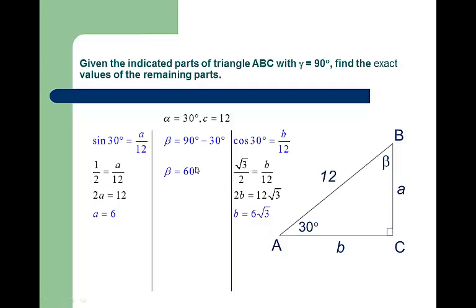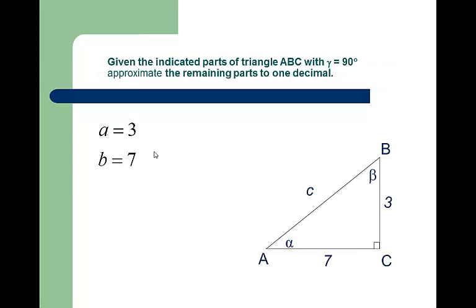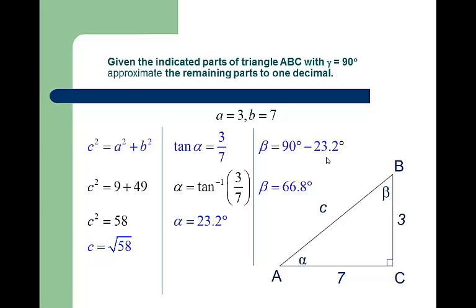We have solved for the three pieces that we're missing. We have to give you three pieces, one of which is that gamma is 90. We have to give you at least one side. We could give you two sides in addition to that, but normally we give you one angle and one of the sides. Now this one's a little different. Given the indicated parts of triangle ABC with gamma 90 degrees, approximate. Pull your calculators out because these aren't nice numbers. If we don't have an angle, we're going to be doing an inverse function.